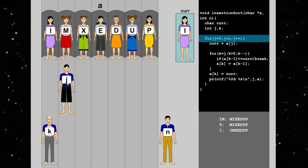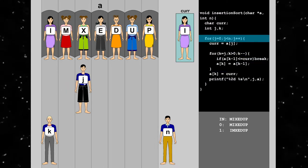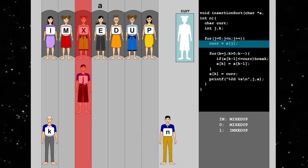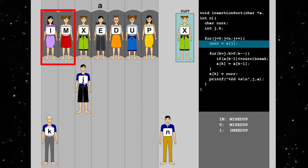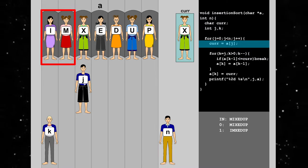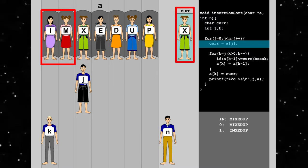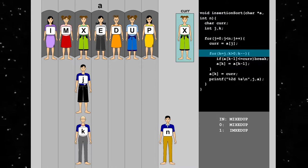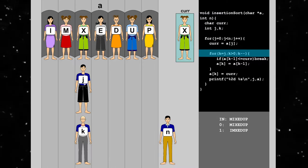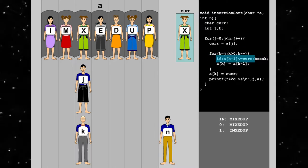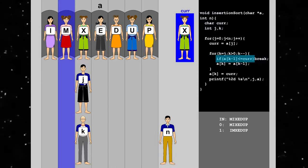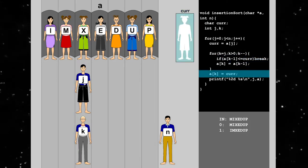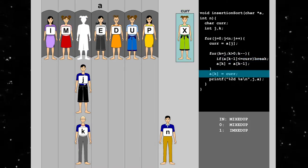Next, we increment j. We pick up x and store it in car. Looking at im, we try to find a place to insert x. We start the loop with k set to j, decrementing to 0. Since the preceding character m is smaller than x, we call break.